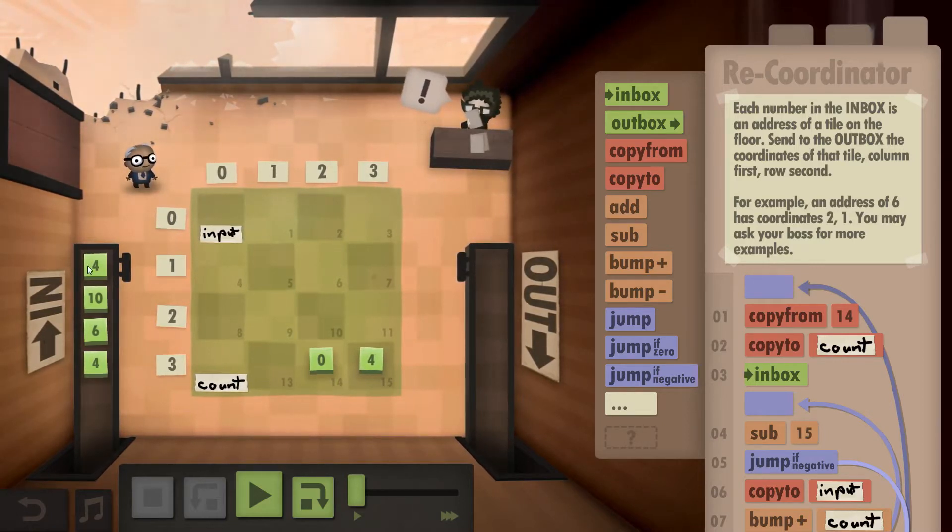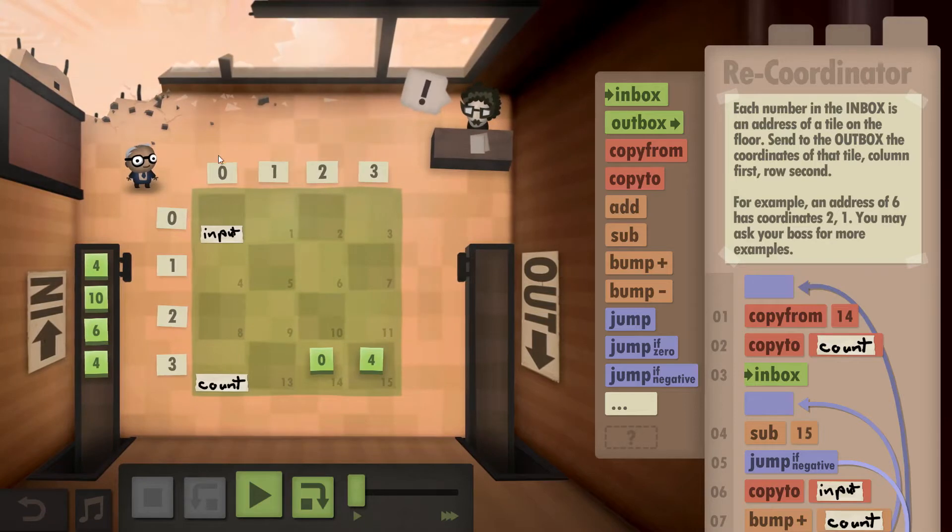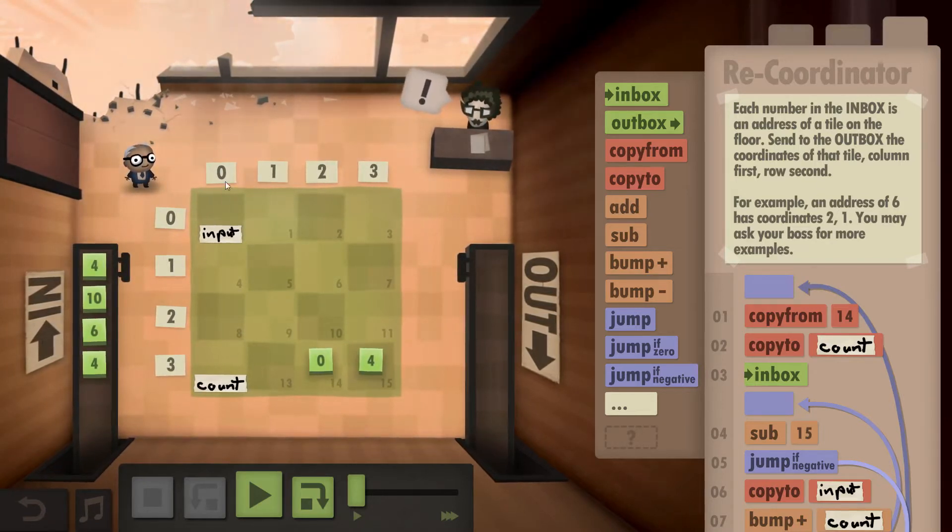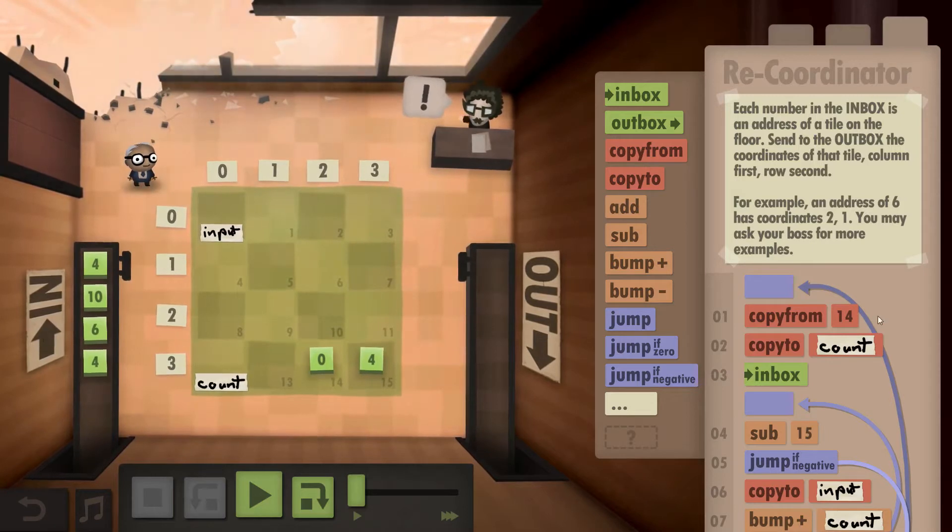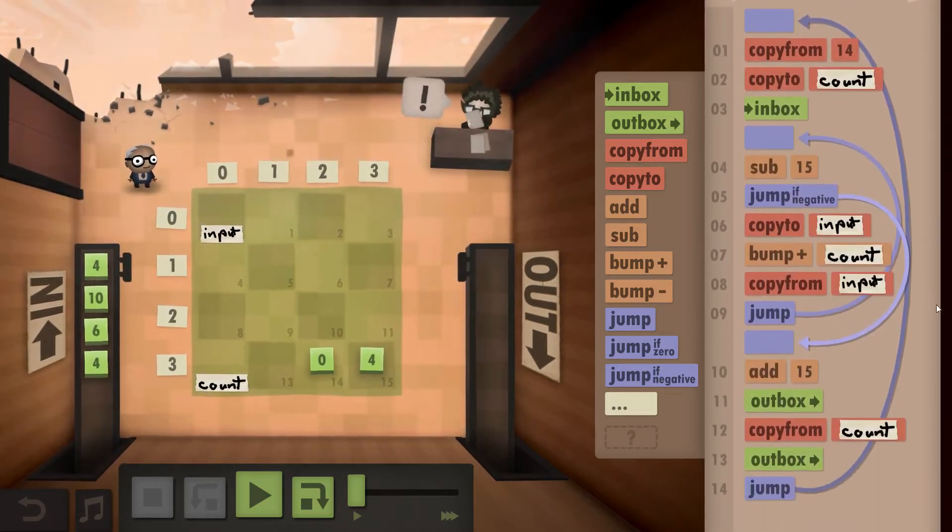So in case of 4, 4 divided by 4 is 1, so you would get your row, and 4 modulo 4 would be 0, so it would be 0, 1. But you have to outbox the modulo first, as it says in the description. Both of these are operations we have seen before, so essentially it's just putting them together and minimizing the number of commands.